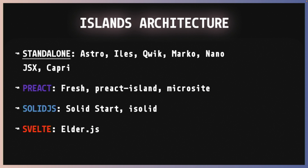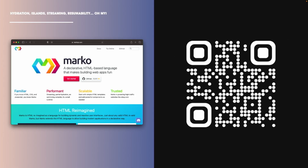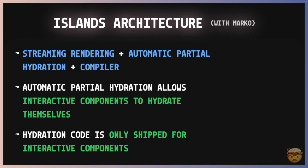Nowadays, you have many options for doing islands. You have standalone meta frameworks like Astro, Quick, Marco, and others. And you also have options for doing islands with Preact, Solid, and Svelte. And Marco is amazing because Marco has been there for years, since 2014. Marco shipped a very interesting combo of streaming rendering with automatic partial hydration and a very smart compiler that would basically generate optimized code depending on whether it was going to run in the server or the client. With Marco, also the components could hydrate themselves, and of course the hydration code is only shipped for these interactive components.